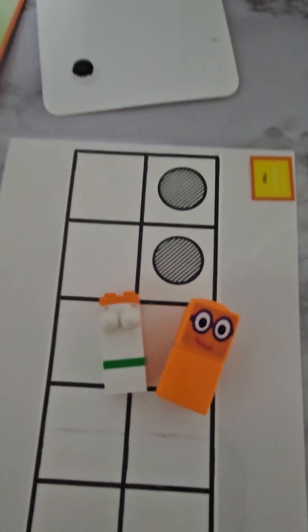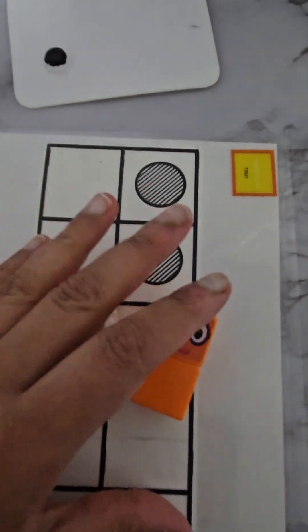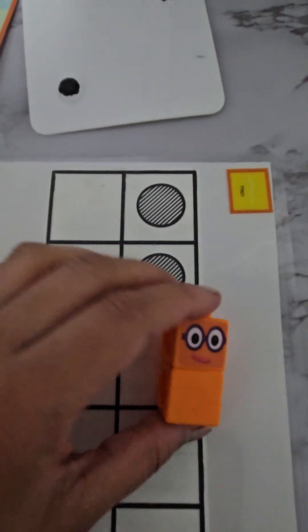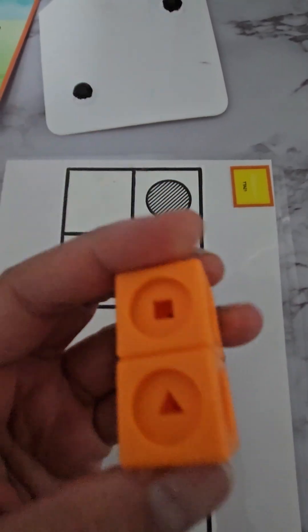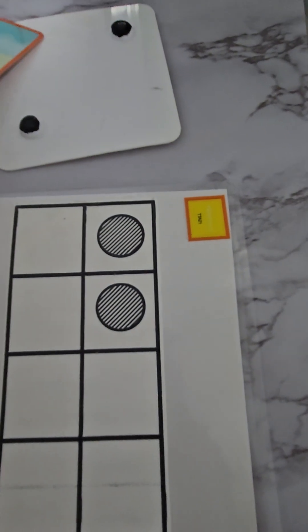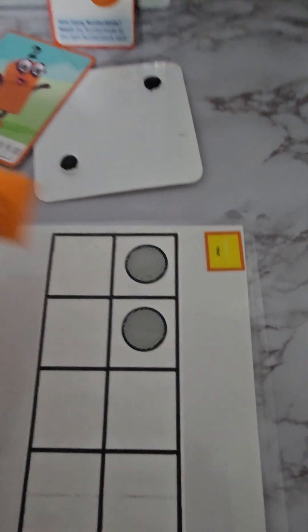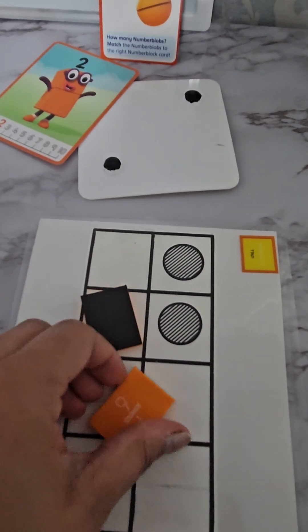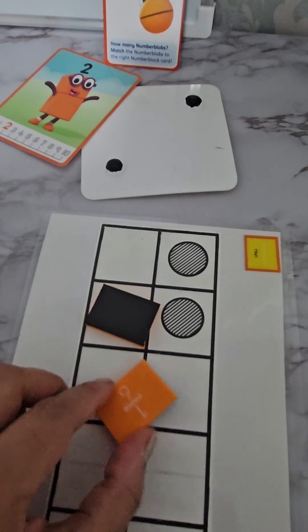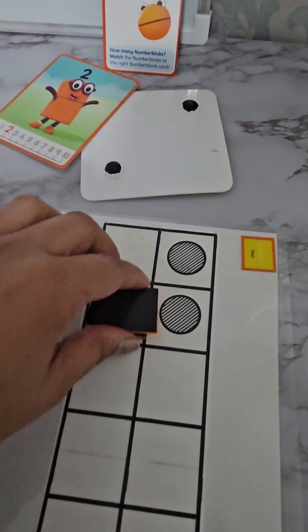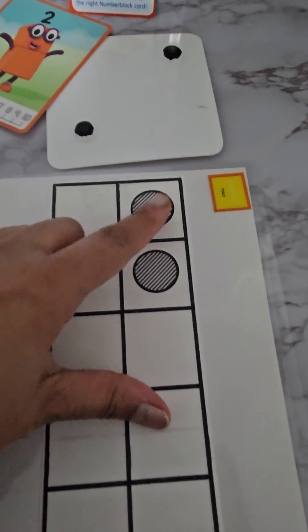We've got two here. We've got two blocks here. We've got two rectangles. Oops. One's black. One's orange. Two dots.